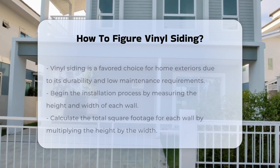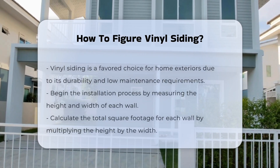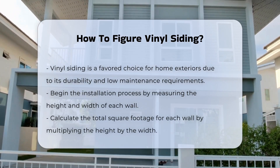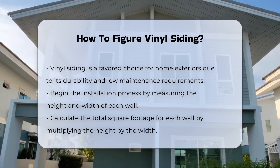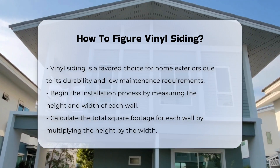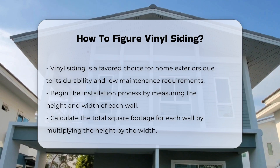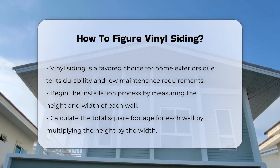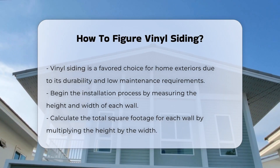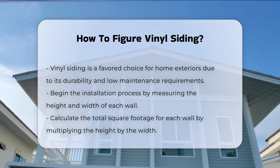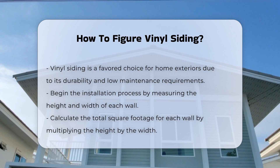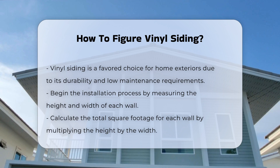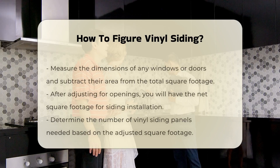Vinyl siding is a popular choice for home exteriors due to its durability and low maintenance. To begin, you need to measure the area where you plan to install the siding. Start by measuring the height and width of each wall. Next, multiply the height by the width to get the total square footage for each wall.